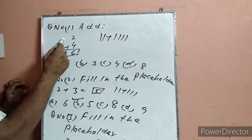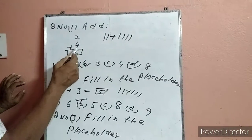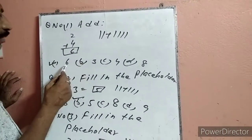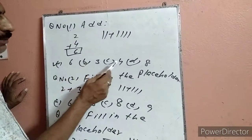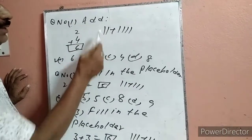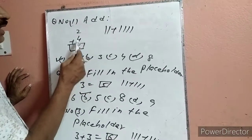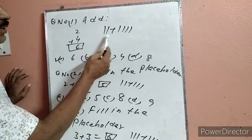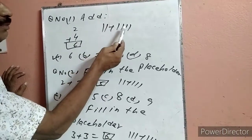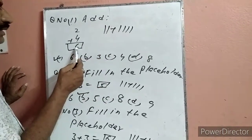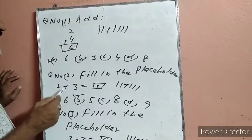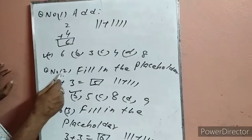Question number 1: Add 2 plus 4. Options: 6, 3, 4, 8. हम 2 line drop करेंगे, plus 4 line drop करेंगे, सबको साथ count करेंगे: 1, 2, 3, 4, 5, 6. 6 हो गया. 6 कहां पर है — option 1 में. हमने option 1 पर टिक लगा दिया.